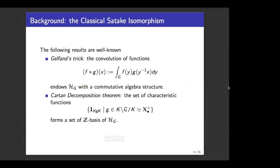Here are two very direct consequences and key properties of the spherical Hecke algebra. The convolution of functions endows the spherical Hecke algebra with an algebra structure, and by the Gelfand trick we can show it's a commutative algebra. We also know the spherical Hecke algebra H(G) admits a Z-basis, which are characteristic functions labeled by the dominant co-characters of G.